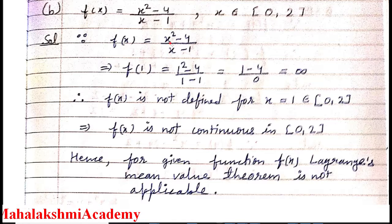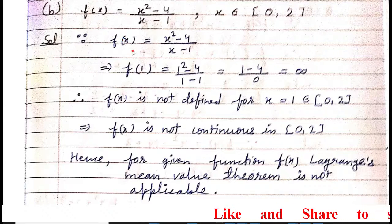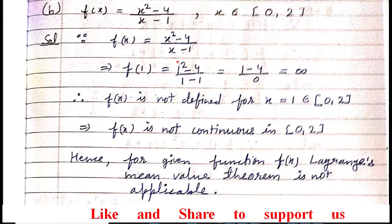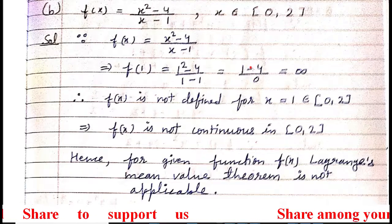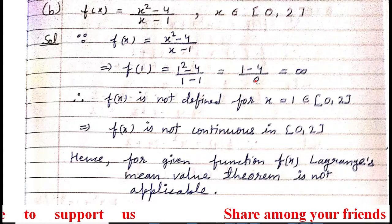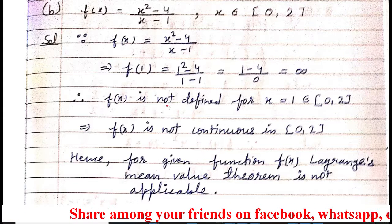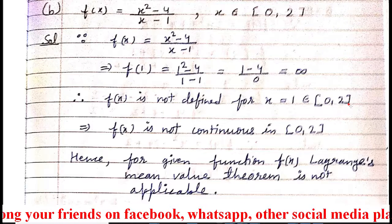I wrote the function here: f(x) = (x² - 4)/(x - 1). Since x belongs from 0 to 2, for x = 1 — because 1 belongs between 0 and 2 — if I replace x by 1 in the function, I obtain (1 - 4)/0. We know that any number divided by 0 is infinity, which means not defined. So f(x) is not defined for x = 1, which belongs in the closed interval [0, 2].